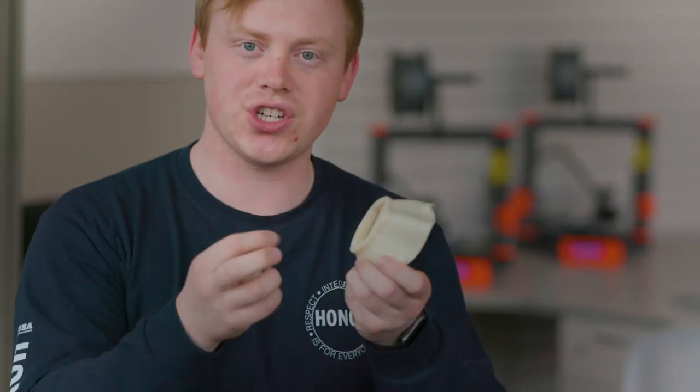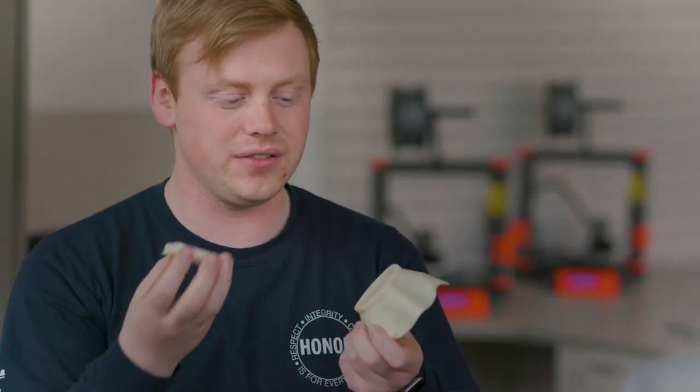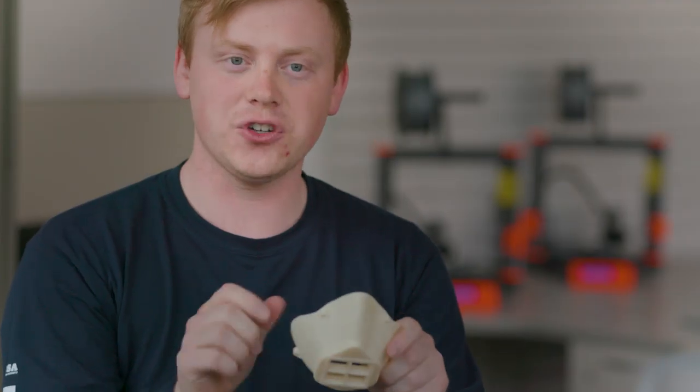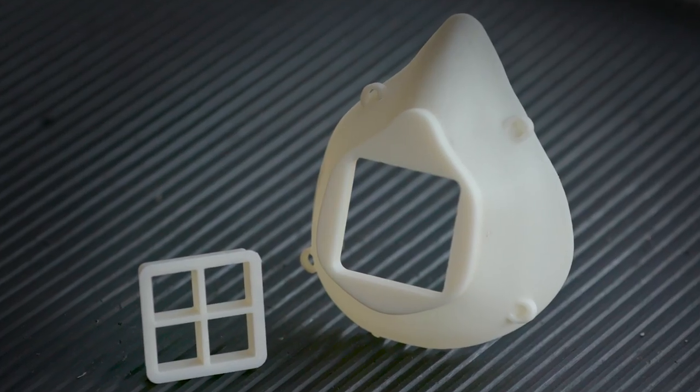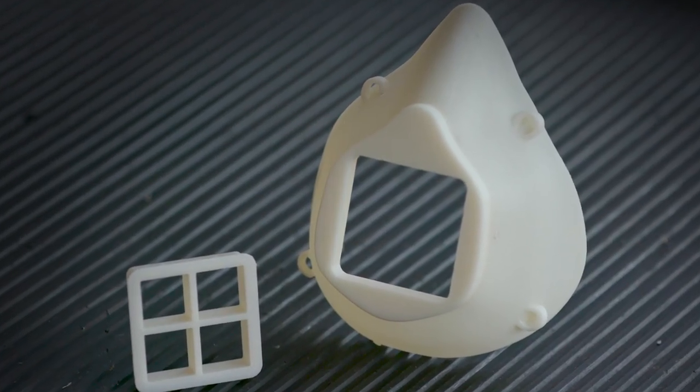You would take a small chunk of N95 rated filter mask and you would place it here and it would go in there like that. Then the first responder can reuse this piece and therefore we will go through less N95 material by only needing a square this size, and because it fits to their face it works really well for reuse.